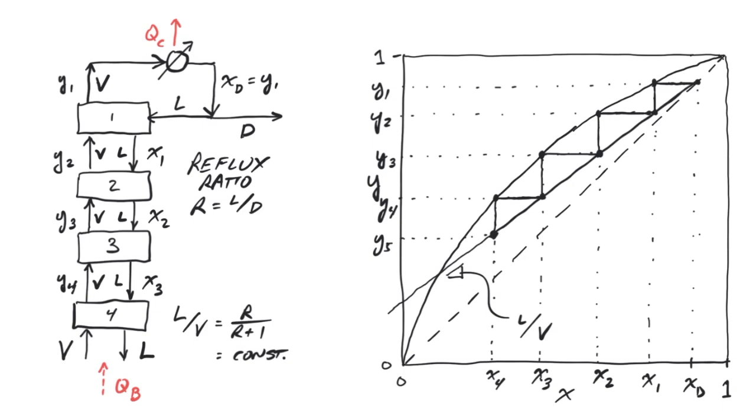You may recall from your separations course that we usually consider two operating lines, one above and one below the feed. But I'll stop the review here and refer you to your separations notes for more details on the use of McCabe-Thiele in design. Instead, what I'd like to do here is consider the use of McCabe-Thiele in two additional contexts, in particular, the analysis of tray efficiency and the analysis of batch distillation.